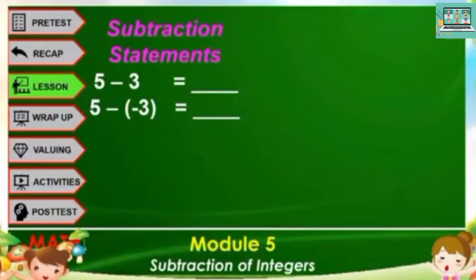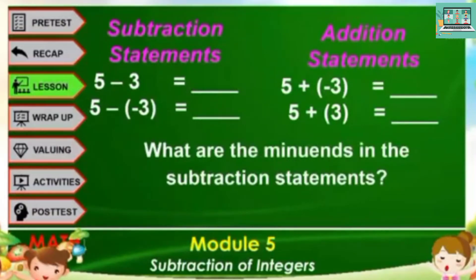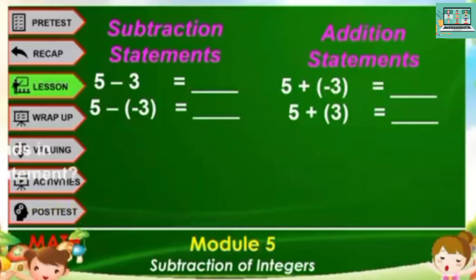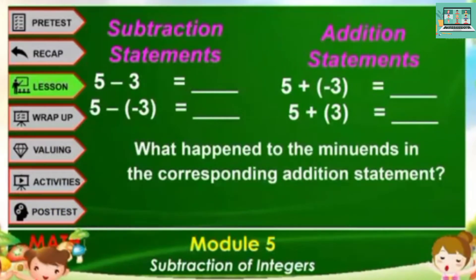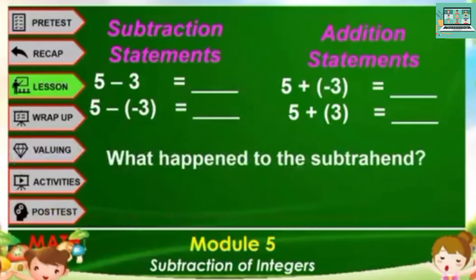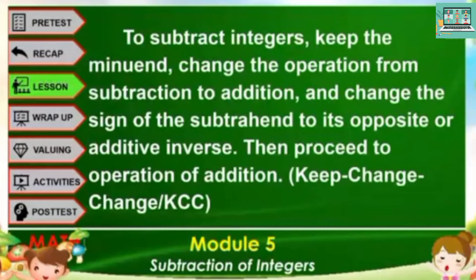From the given examples, we noticed that a subtraction statement can be written as an addition statement. To subtract integers: keep the minuend, change the operation from subtraction to addition, and change the sign of the subtrahend to its opposite or additive inverse. Then proceed to the operation of addition. This is also known as Keep-Change-Change, or KCC.